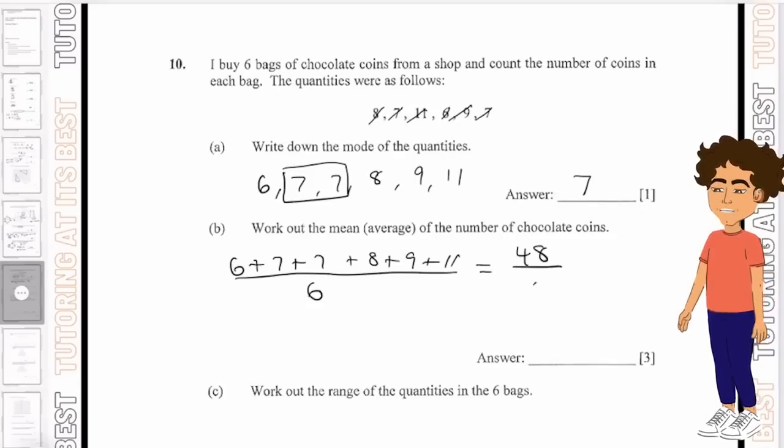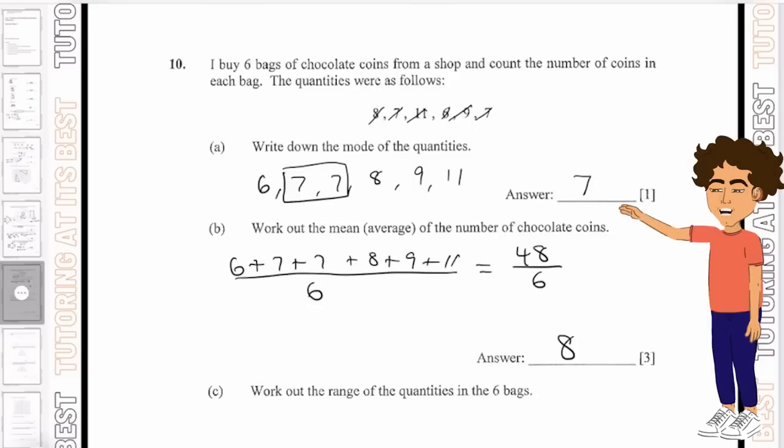So we've added them up, we divide them by 6, which means we'll have 48 over 6, which gives us 8. We take the sum and then we take the division and we get our answer.